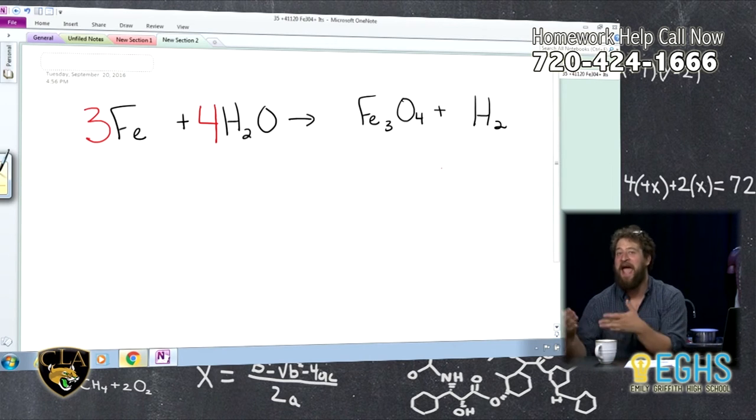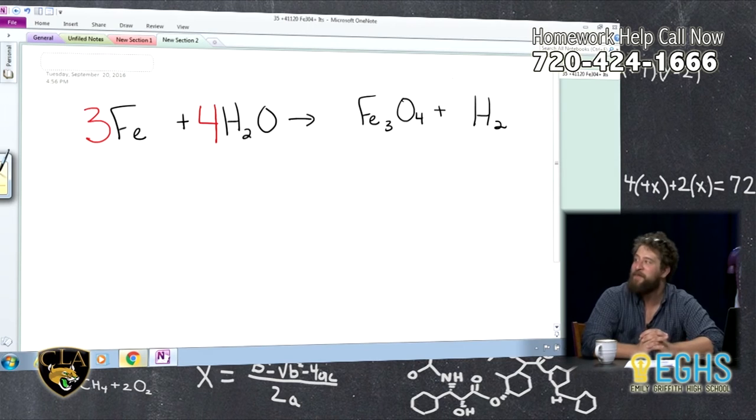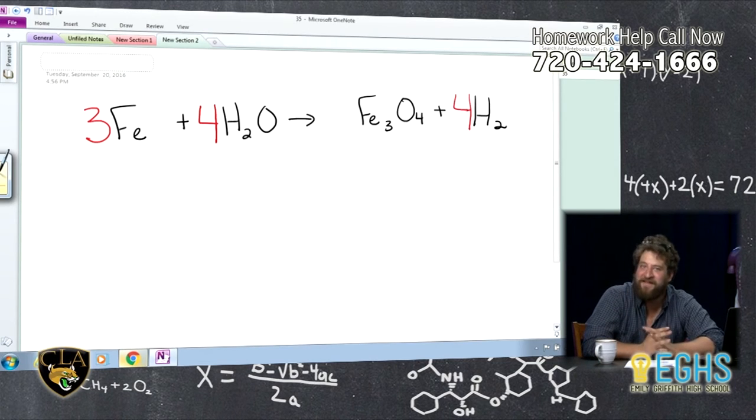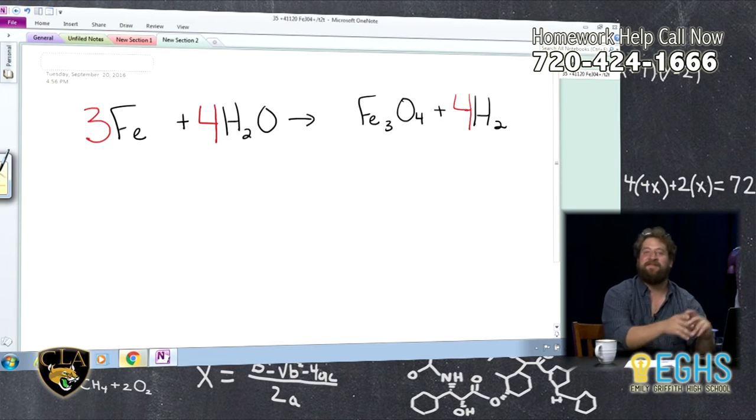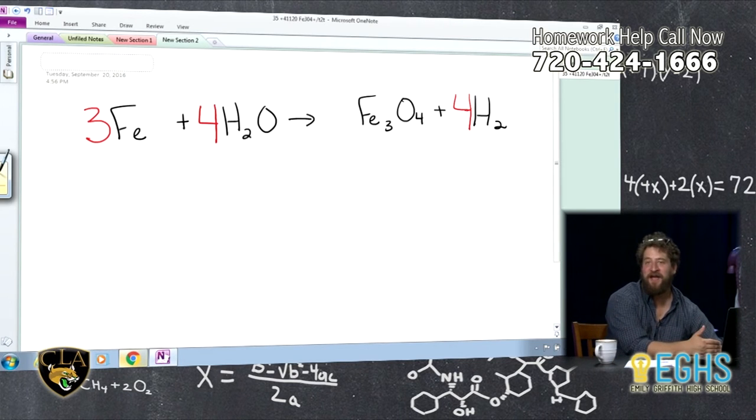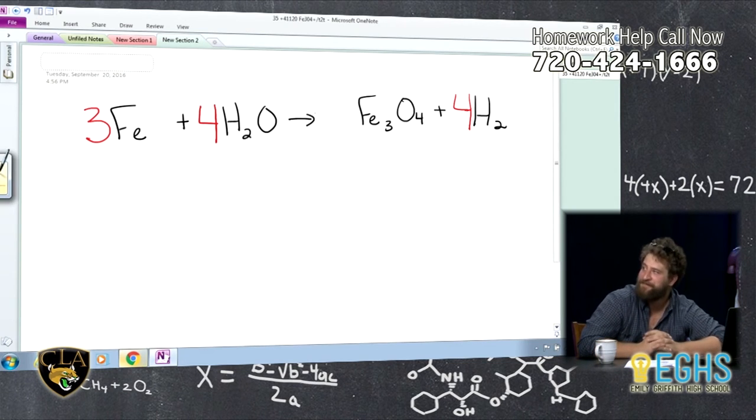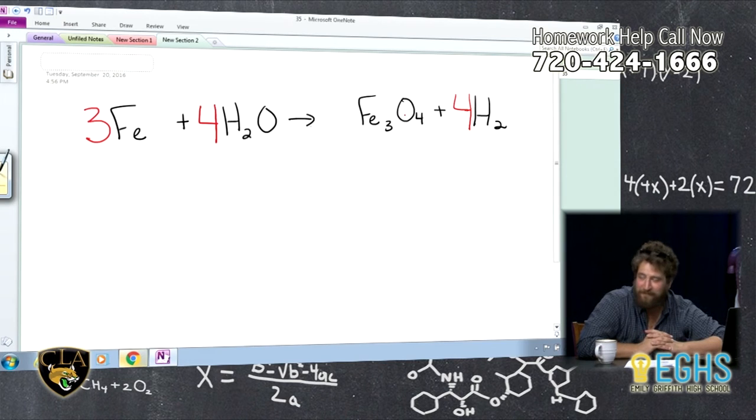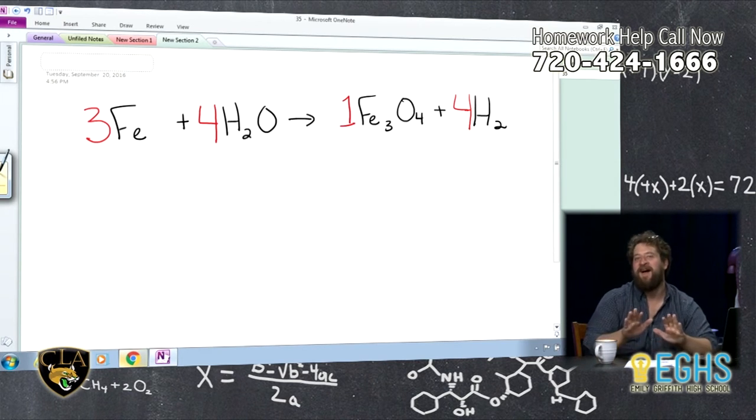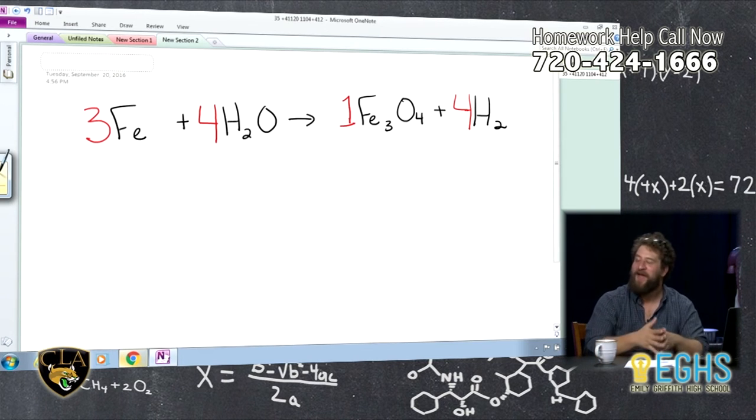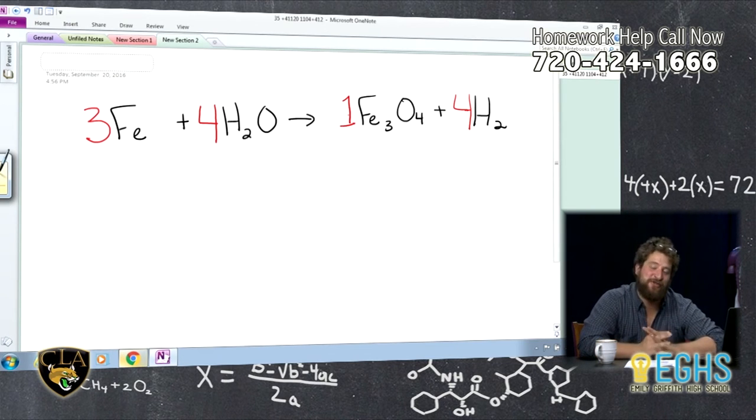Over on the other side, I already have two hydrogens on the product side. I'm going to have Nate put a coefficient of four in front of that H2, balancing us out. So now I have three iron plus four water yields—and I'm going to have Nate put a one there in front of my iron oxide. One mole of iron oxide and four moles of hydrogen gas.